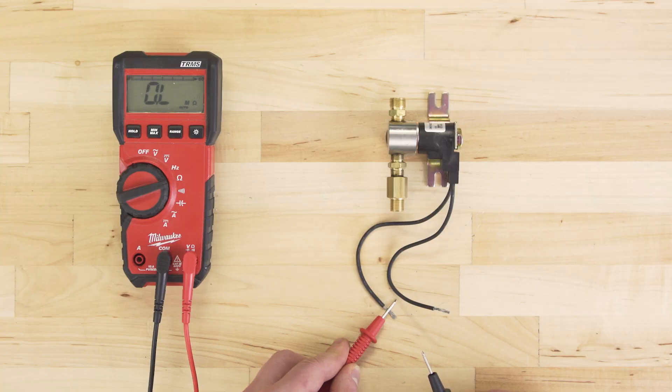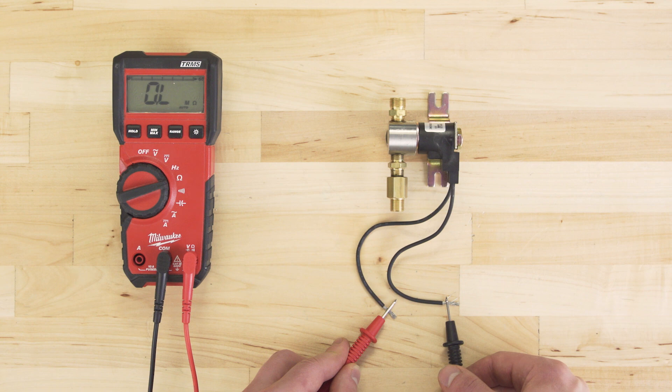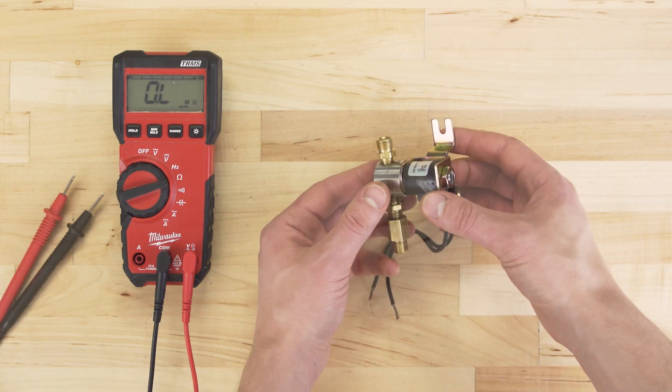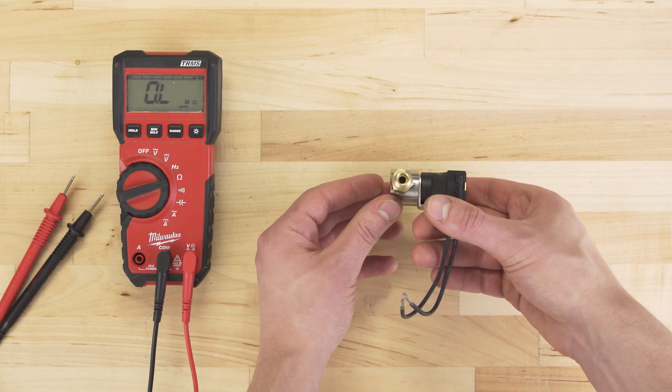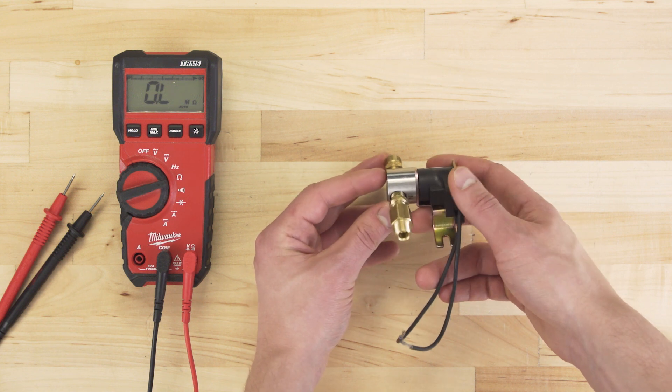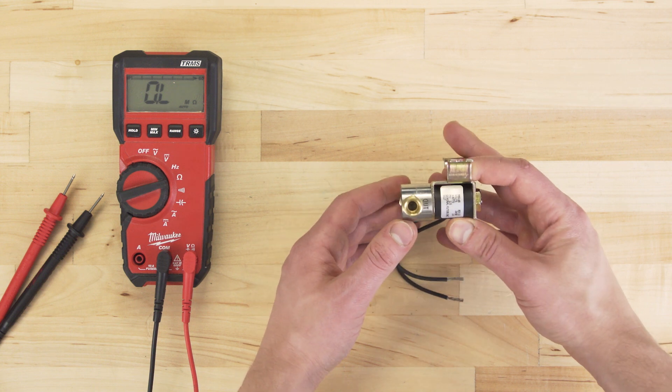Now if the solenoid doesn't have continuity, then the coil will not energize, and the valve will not open. Keep in mind, solenoids can also fail mechanically, and even with continuity, the valve might be stuck open or stuck closed.